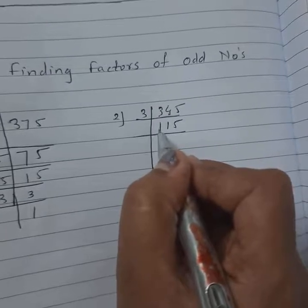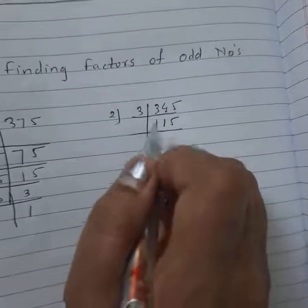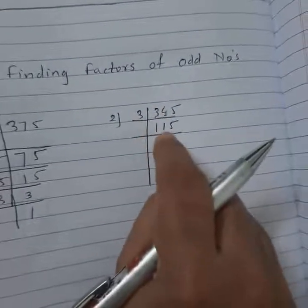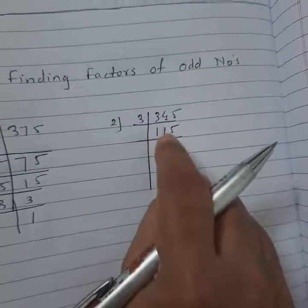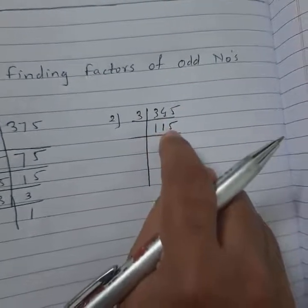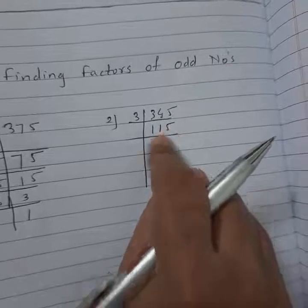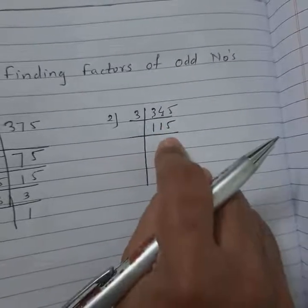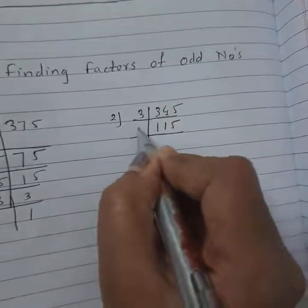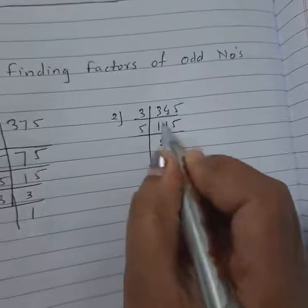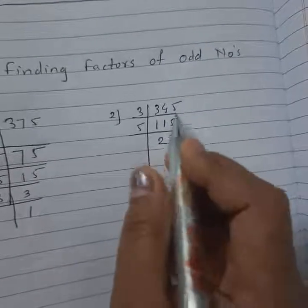Check the last two digits: 15. 15 comes under the 5's table, so I use the 5's table. 5 times 2 is 10, remaining 1. 5 times 3 is 15, giving 23.